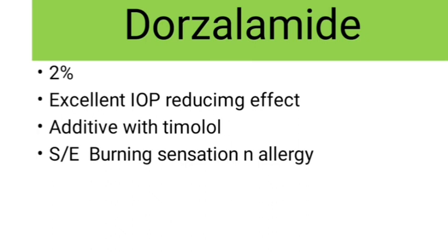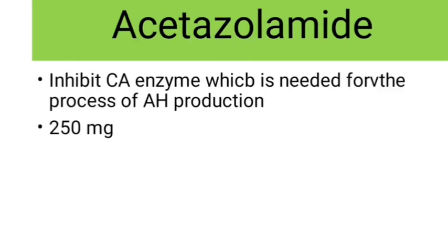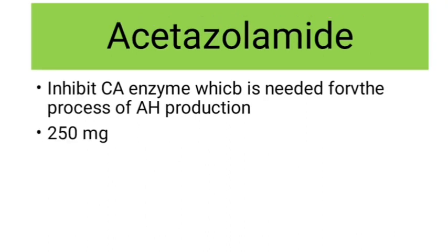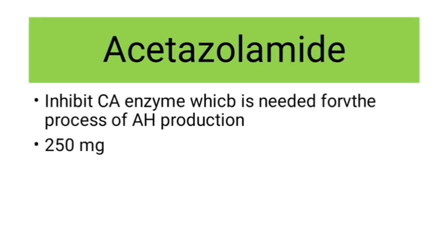The next two drugs are carbonic anhydrase inhibitors, which includes both topical and systemic. In the systemic carbonic anhydrase inhibitor we have acetazolamide. It inhibits the carbonic anhydrase enzyme which is needed in aqueous humor production, thereby decreasing the aqueous humor production. It comes in 250 mg tablet dosage. Side effects are paresthesia of the fingers, toes, hands and feet, and urinary frequency may also be increased because of its diuretic effect. Because of its serum electrolyte imbalance effect, it can lead to malaise symptom complex.